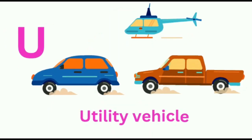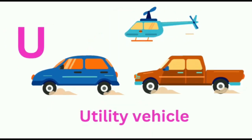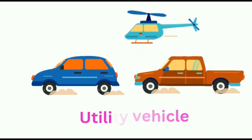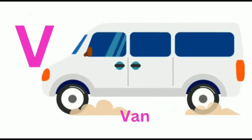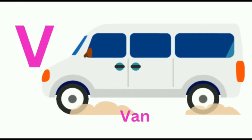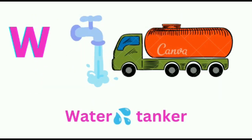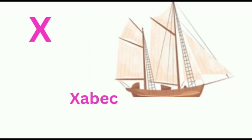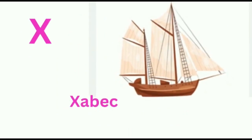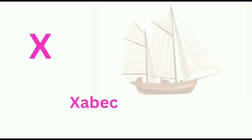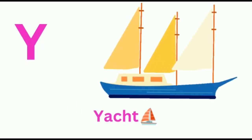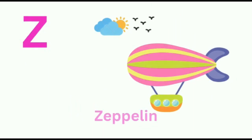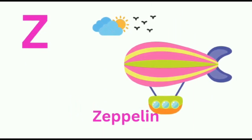U for utility vehicles. V for van. W for water tanker. X for shabak. Y for yacht. Z for zeppelin.